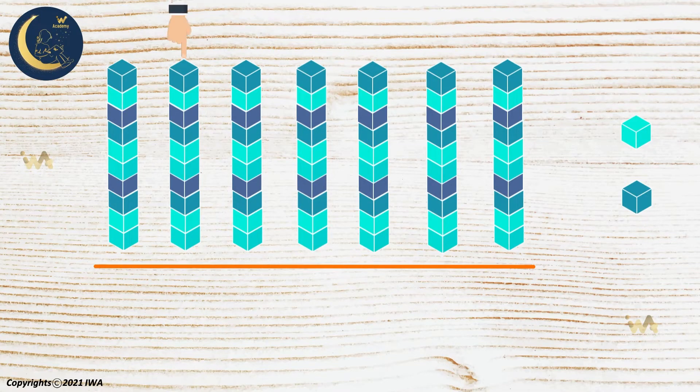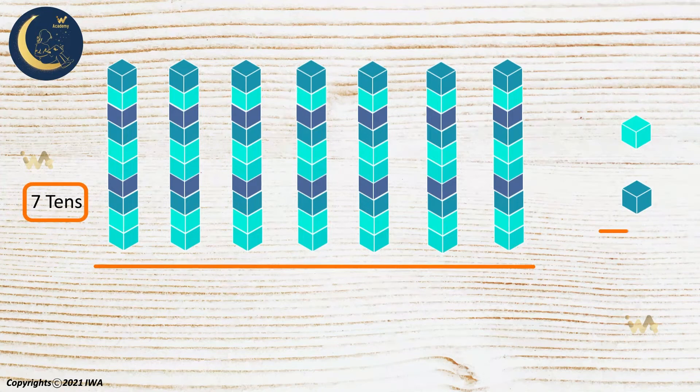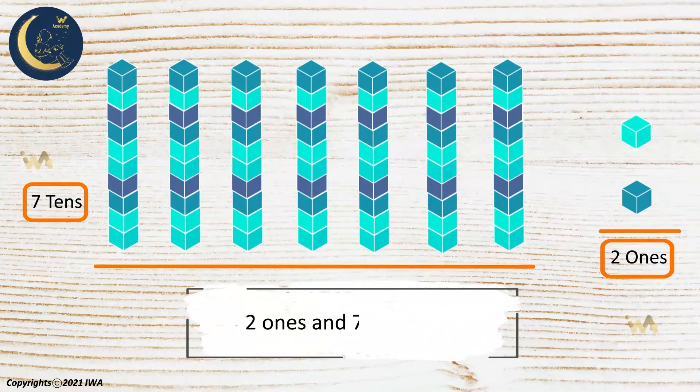1, 2, 3, 4, 5, 6, 7. So we have 7 tens, and here we are left with 1, 2. So two ones.